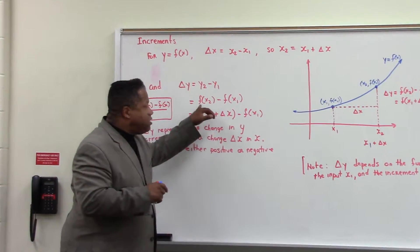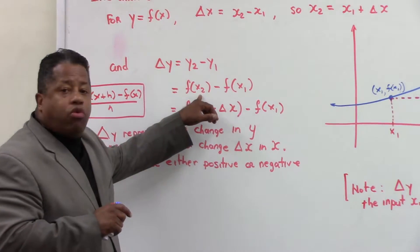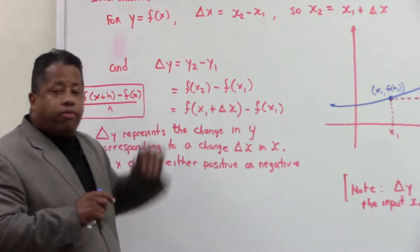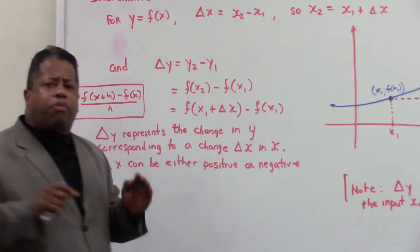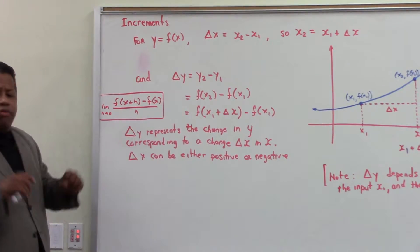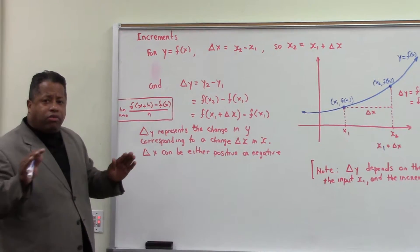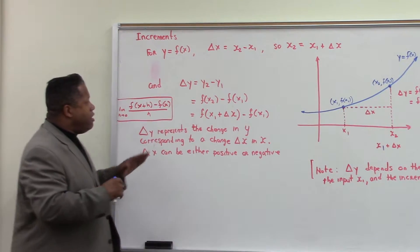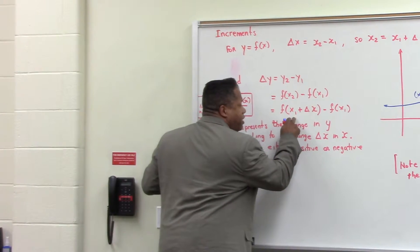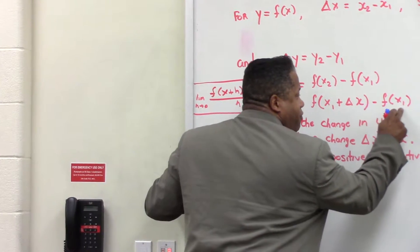Here we have the function with the value included. This is sort of like the piece of the rate of change, and we talk about the rate of change a lot dealing with this type of problem. This gives us f of x₁ plus delta x minus f of x₁.